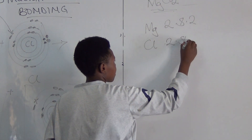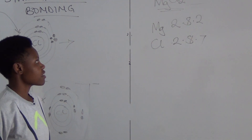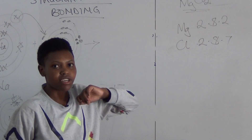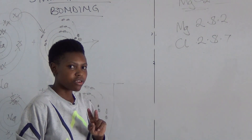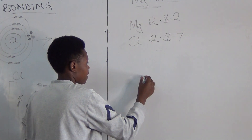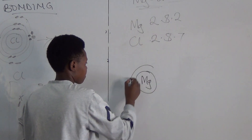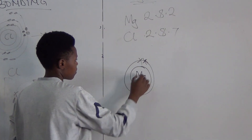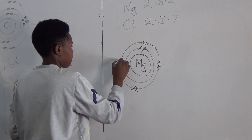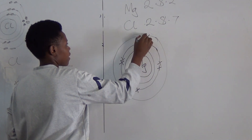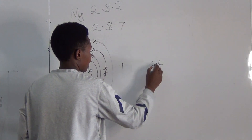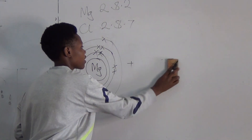This means magnesium is going to lose two electrons while chlorine is going to gain an electron. But from the chemical formula, there are two chlorines, so each chlorine is going to gain one electron. There are two chlorines and each chlorine requires one electron to be stable. To show this, we draw the structure of magnesium: it has 2 electrons in the innermost energy level, 8 electrons in the second energy level, and 2 electrons in the outermost energy level. Magnesium combines with chlorine — and remember, there are two chlorines, so we must show both.